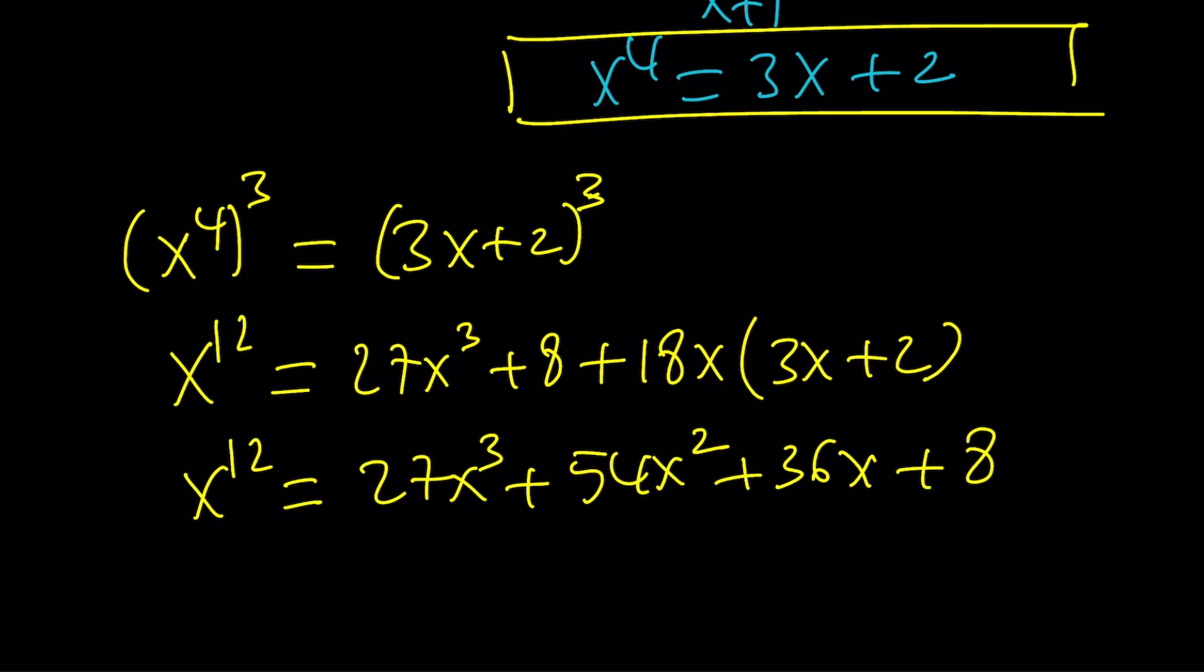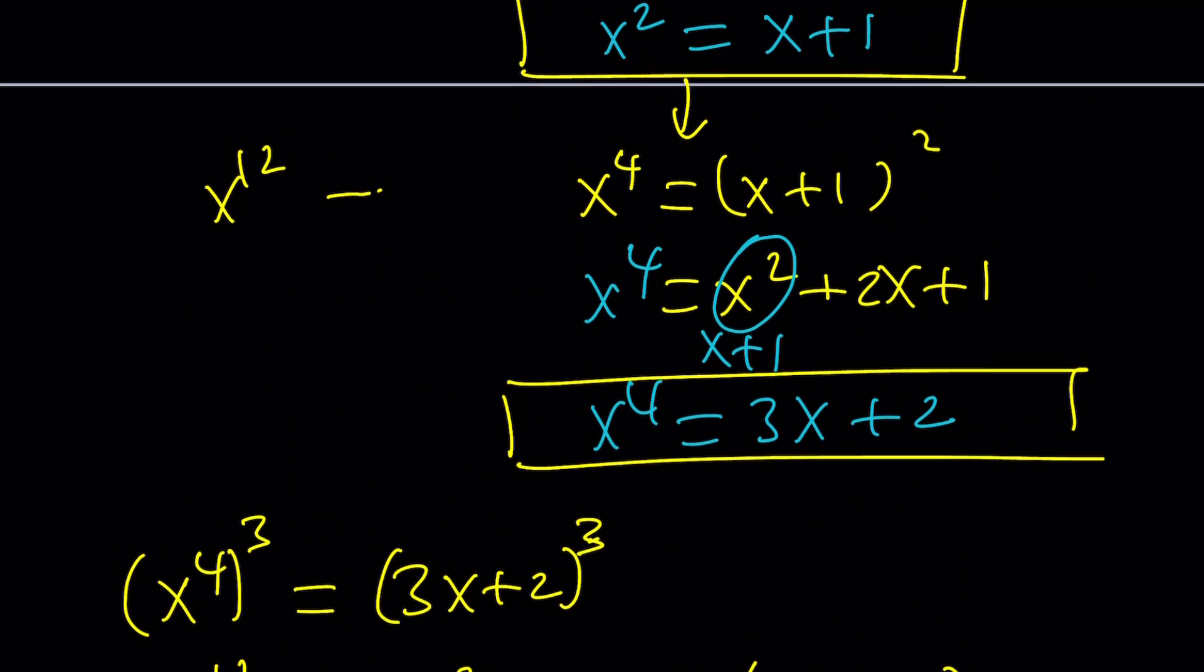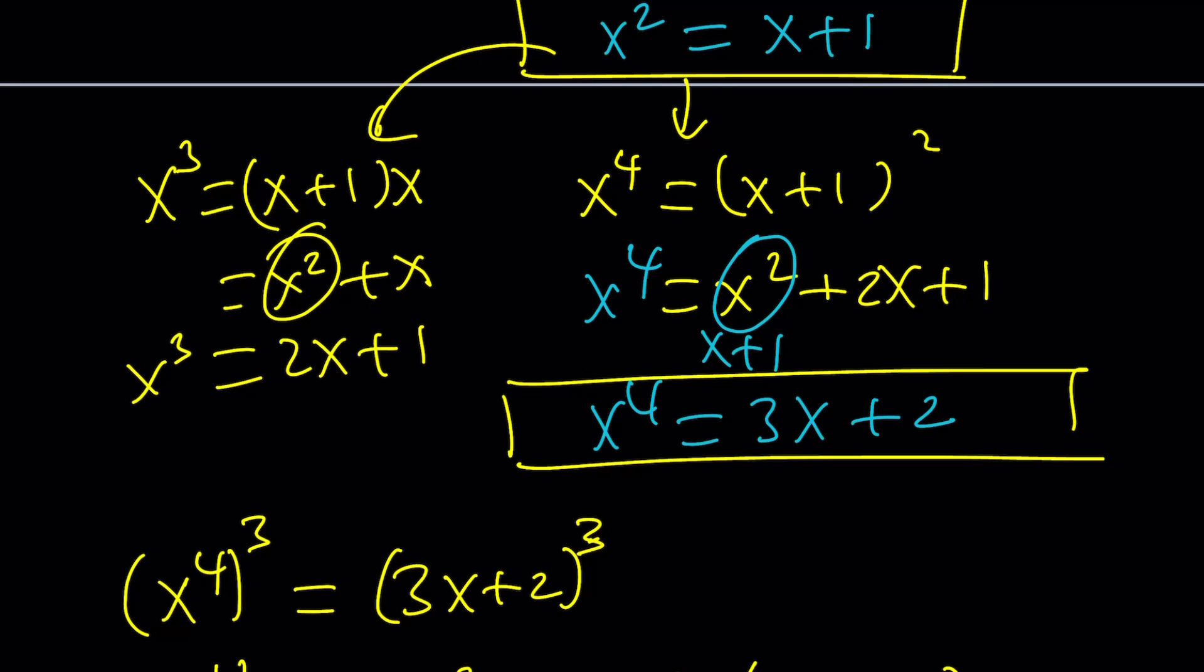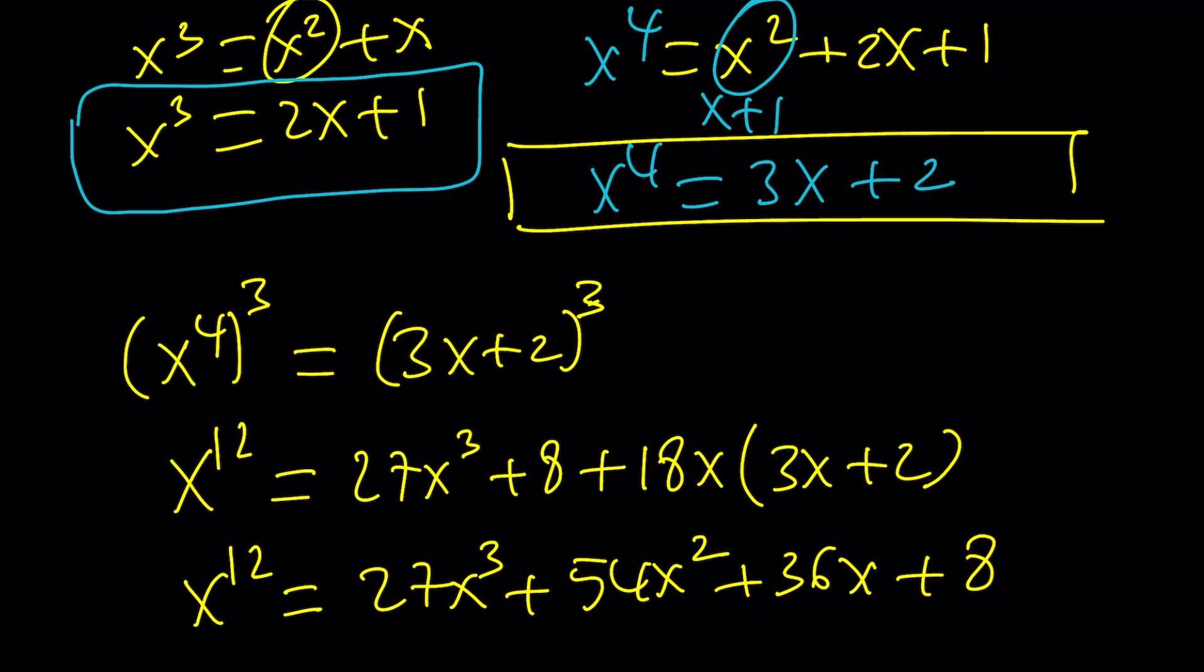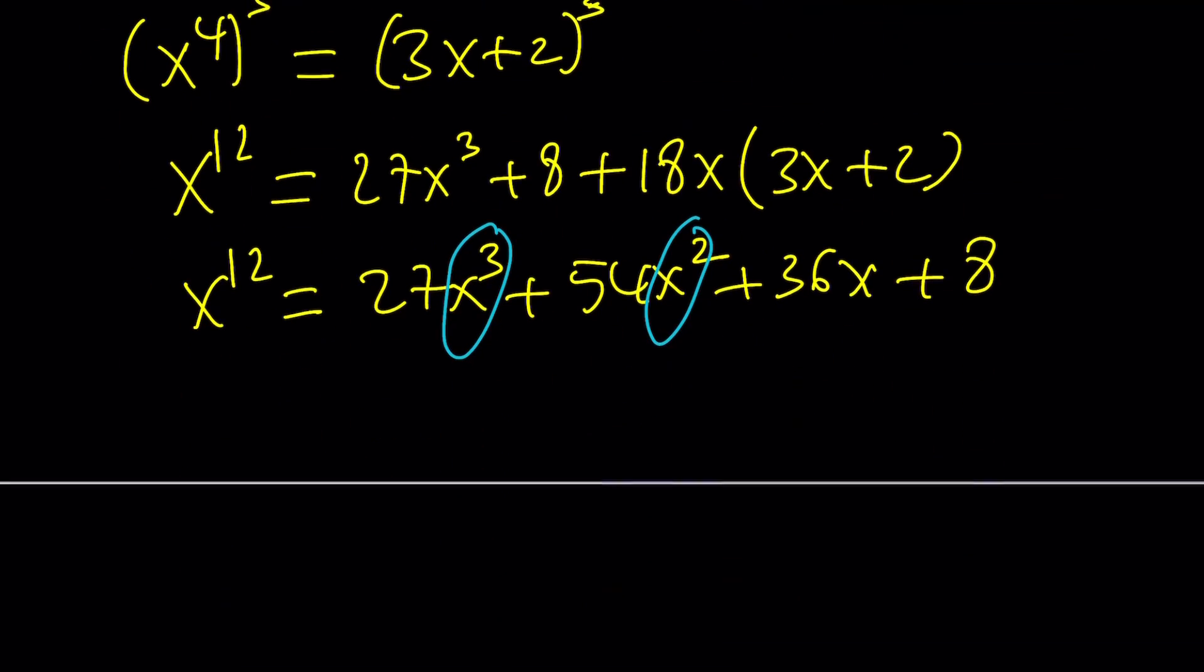And X to the 12th from here is going to be 27X cubed plus 54X squared plus 36X plus 8. What is X cubed? Do I know it? I don't. But I can find it. X cubed actually can be found from X squared just by multiplying both sides by X. So X cubed is going to be X plus 1, which is X squared times X. That's X squared plus X. But X squared is X plus 1. So this is going to be 2X plus 1. So you see, we can pretty much linearize any power because we can do it. It's a polynomial. So now let's go ahead and replace X cubed with this and X squared with that, whatever they are. And then we're going to simplify our expression and find something linear again.